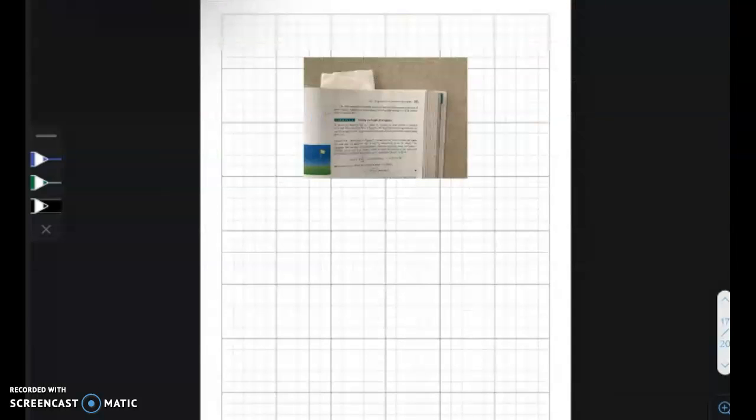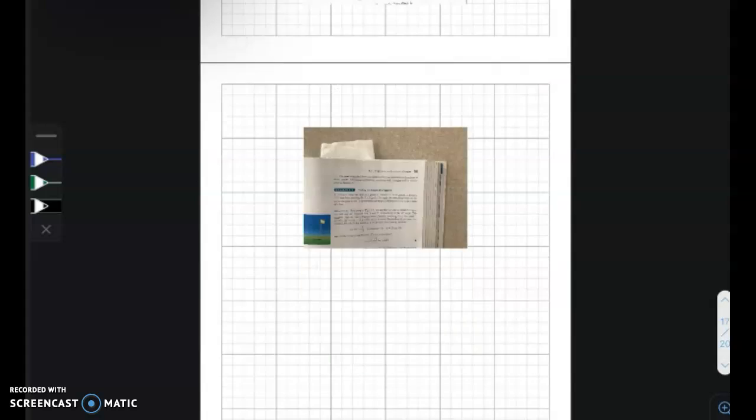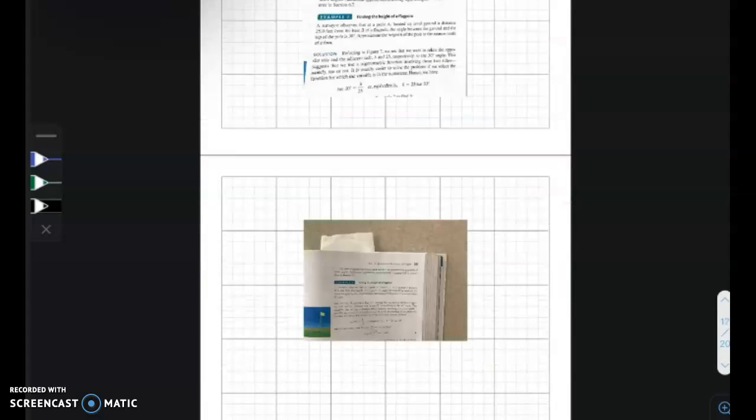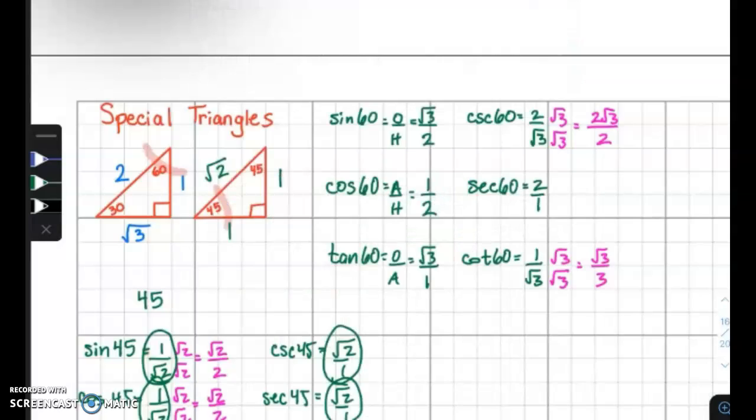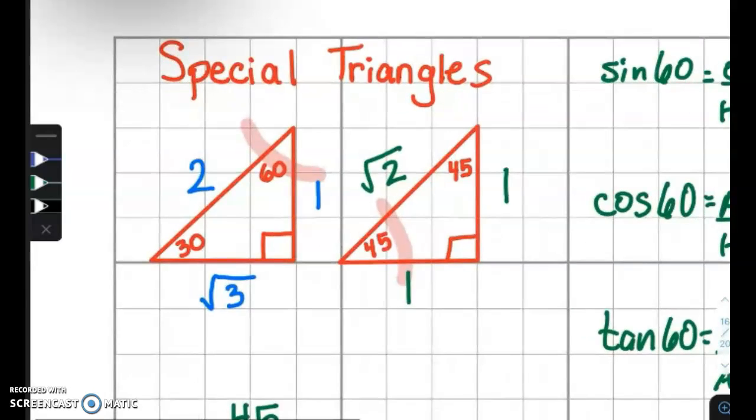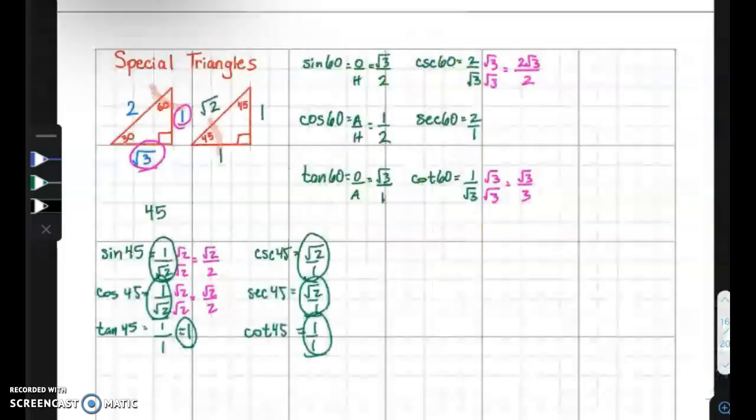Earlier we did tangent of 30. I already erased it. Tangent of 30, if we use our special triangles, again, you can just type this into a calculator. But tangent of 30 is opposite over adjacent, so 1 over radical 3.